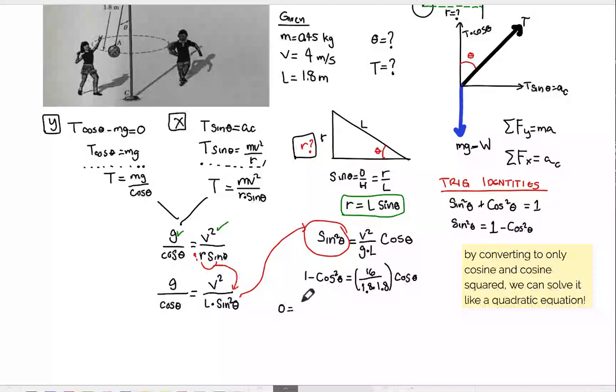That's going to give us 0 equals cosine squared theta, that's plus, and that's going to be 0.907029 cosine theta minus 1.